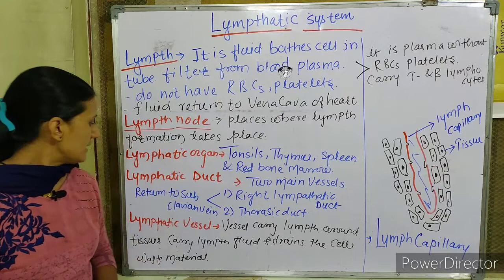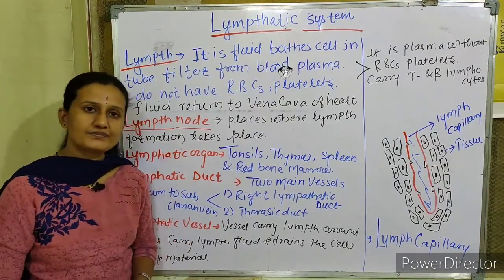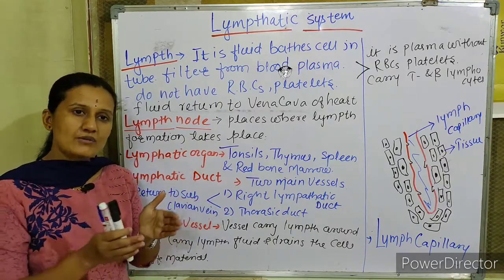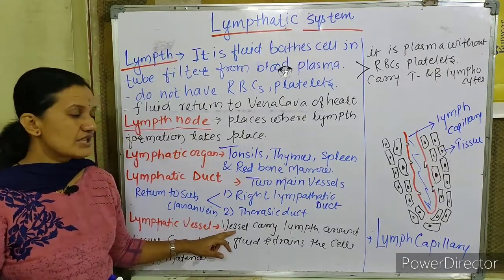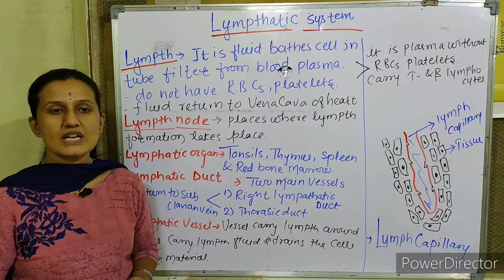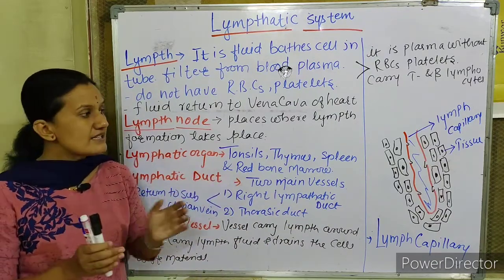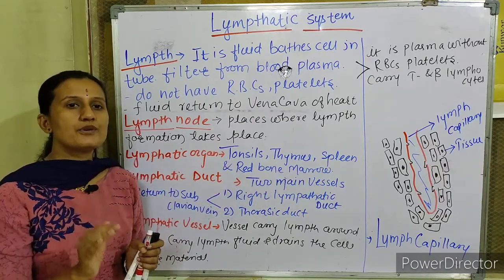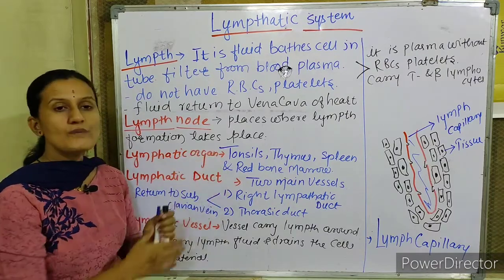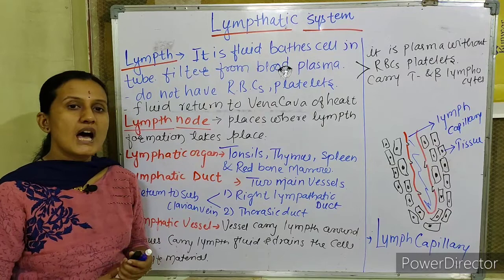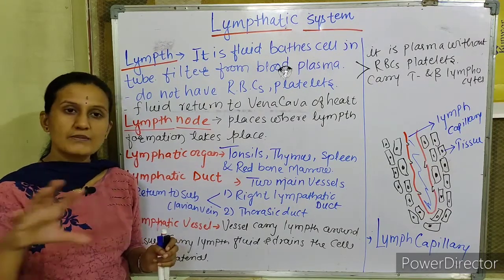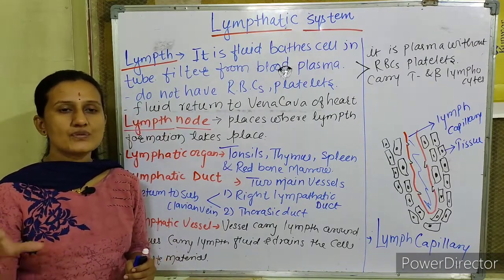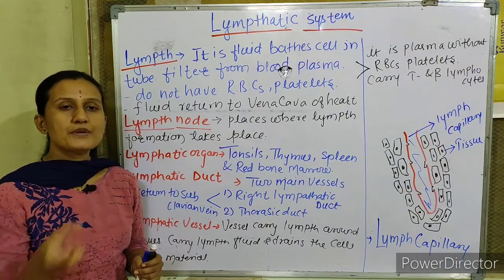When lymphatic ducts go toward organs they become narrow and are called lymphatic vessels, which carry the lymph fluid. These are minute vessels which carry lymph fluid, draining from blood vessels all the waste material and CO2 from the tissues and putting it into the veins.